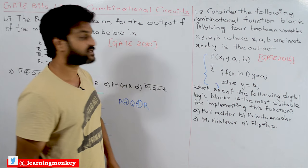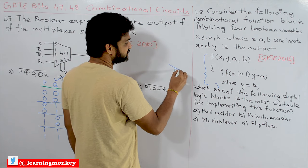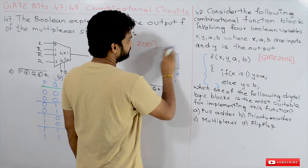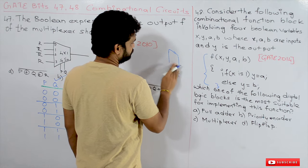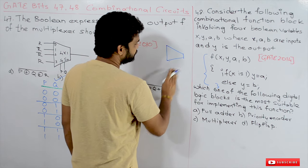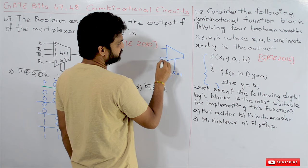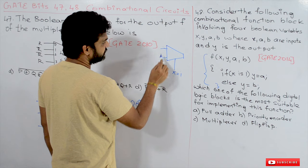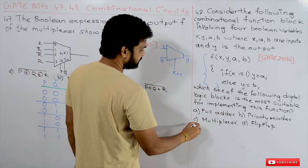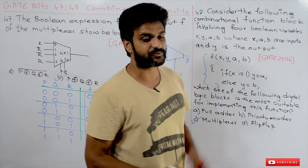Based on this function, whenever X equals 1, A is produced at output Y; otherwise B is produced at Y. This concept has already been discussed — it is a multiplexer. Specifically, this is a two-input multiplexer where X acts as the select line. This function is the same as that of a multiplexer. This is how we can solve these problems. Hope you got clarity on this concept.